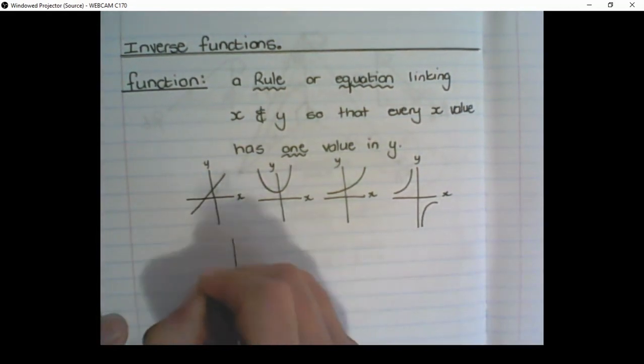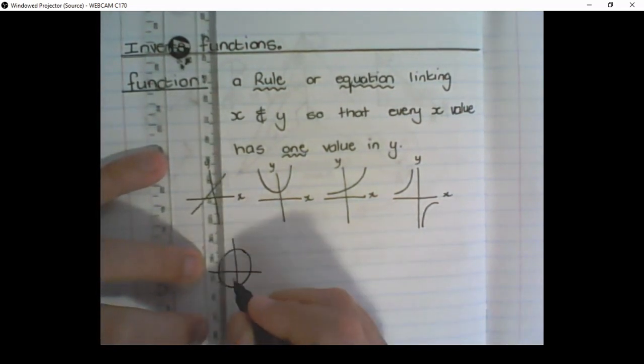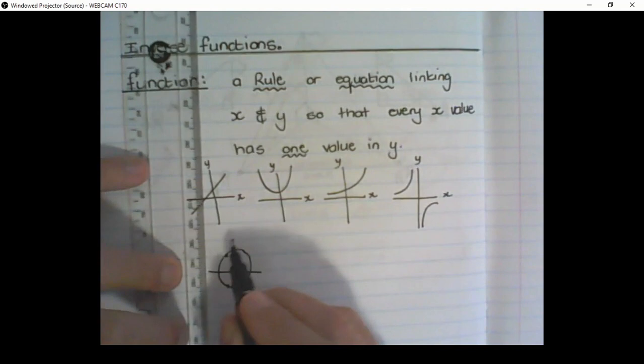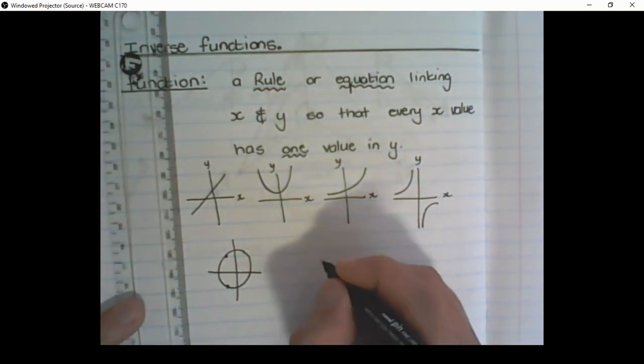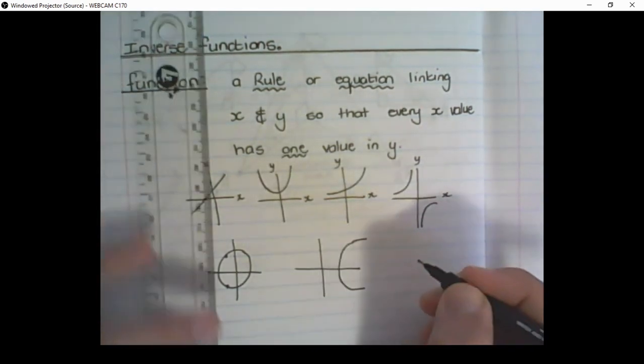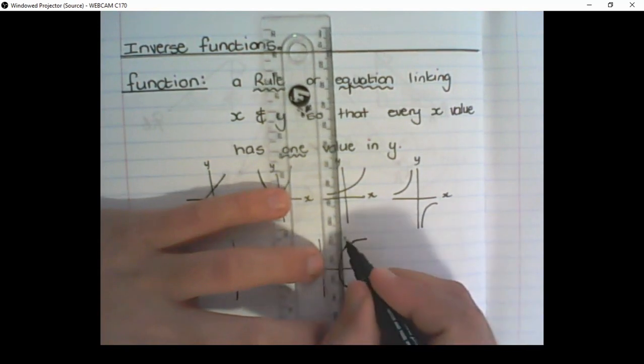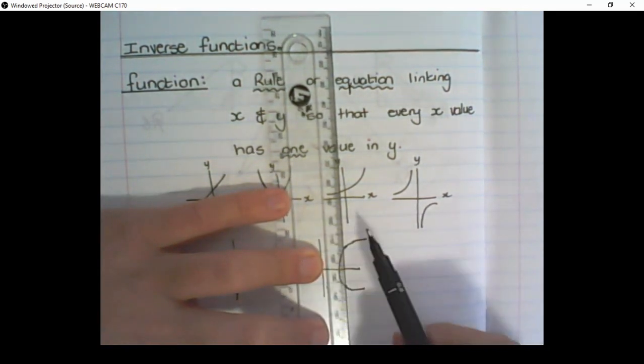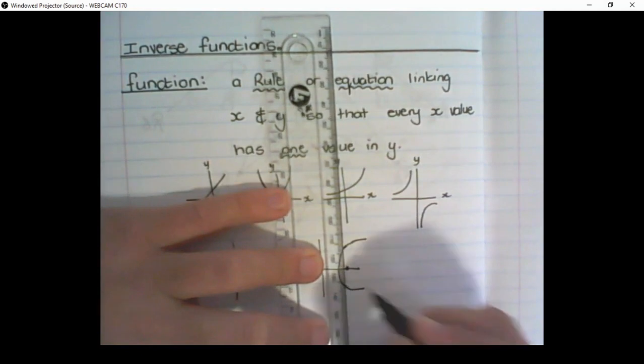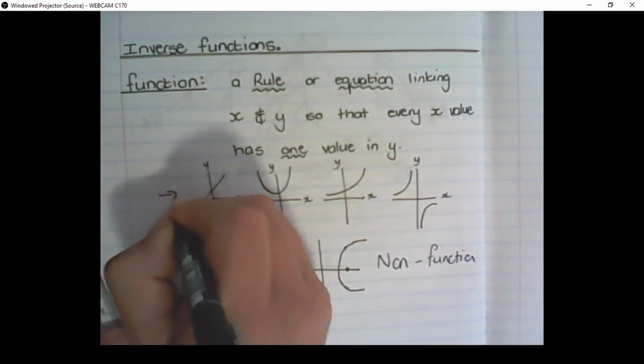So for example, if I take a circle and I do the vertical line test, then I would see that it's touching the vertical line at two places. Therefore, the equation of a circle is not a function. Another one, if I take the parabola and I tilt it on its side, then I can see that that's also not a function. Because the vertical line test is not satisfied and it's touching at two places. So for this x-value, there's two values in y. So these are non-functions, and these are functions.